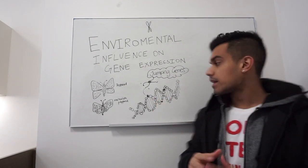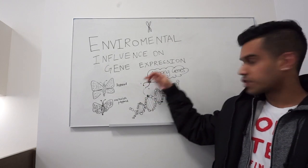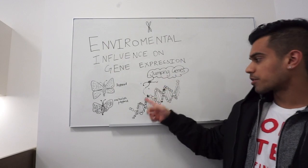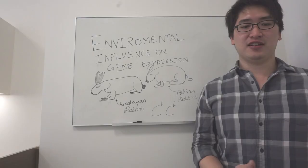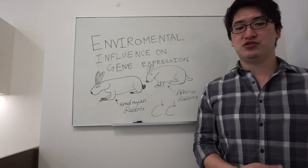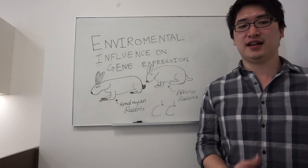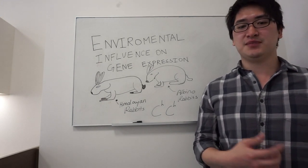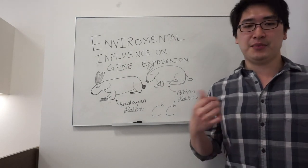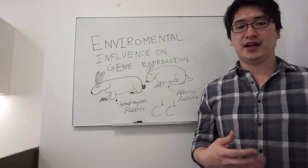The jumping genes are mobile segments of DNA that can alter gene expression of other genes by changing their position within a genome. After talking about UV radiation and chemical drugs, the change in environmental temperature can also be a factor that influences species' gene expression. The Himalayan rabbit is an example of an animal affected by temperature.